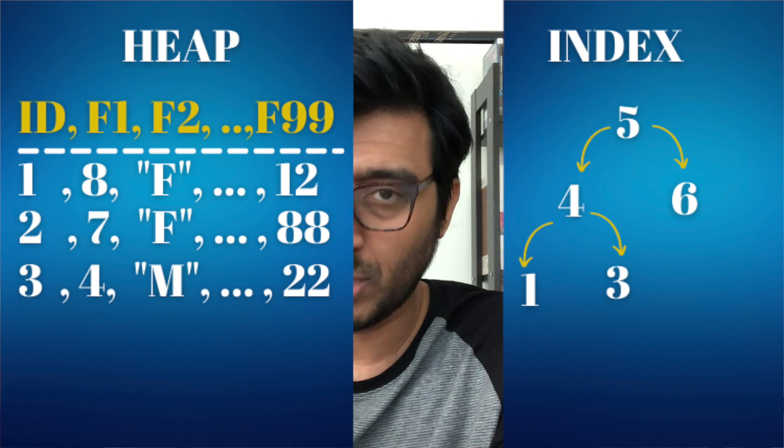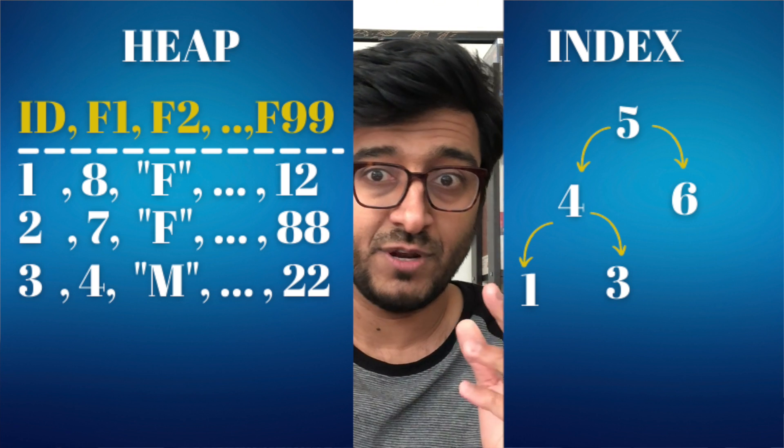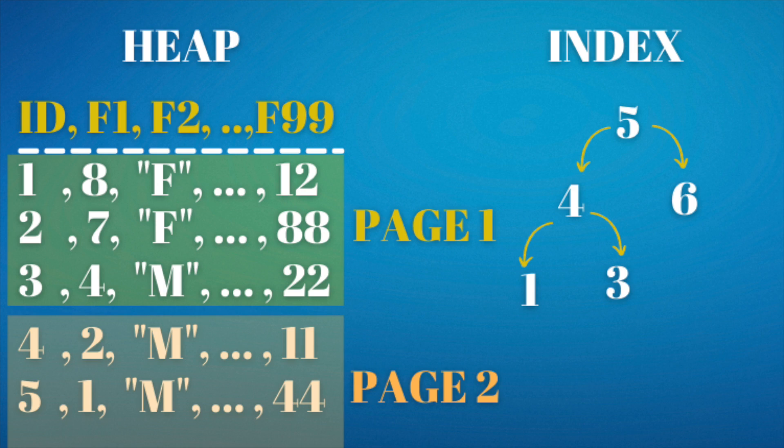Then it looks at which fields you want to return — you want all of them. But the index doesn't have all the fields, so Postgres has to go back to what's called the heap table, where the actual physical row data lives. It finds which page or block those tuples are in, pulls that block, rechecks each row, and confirms those are the rows it wants.